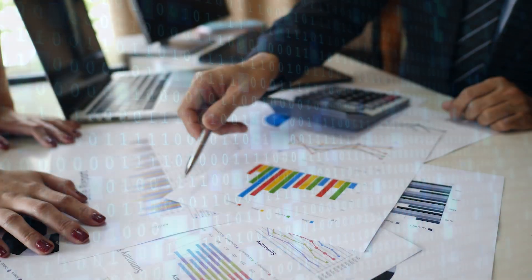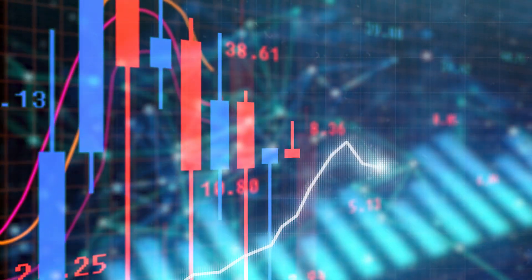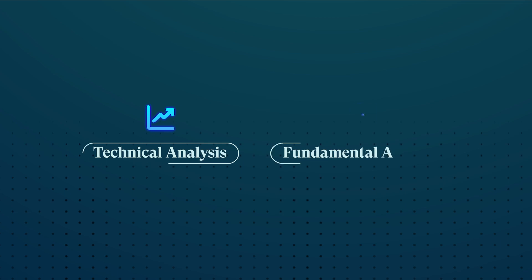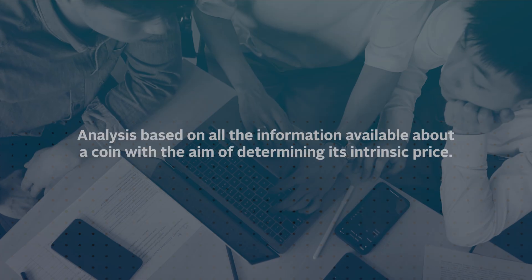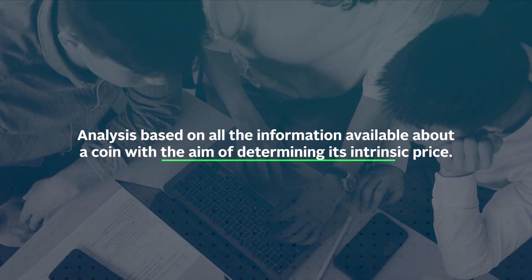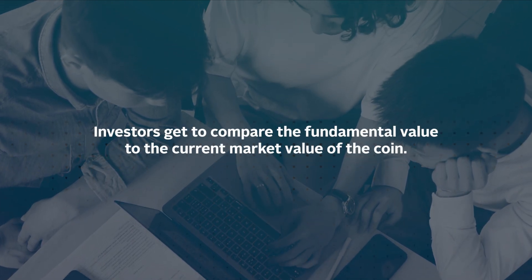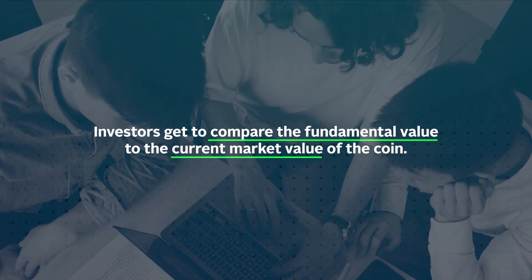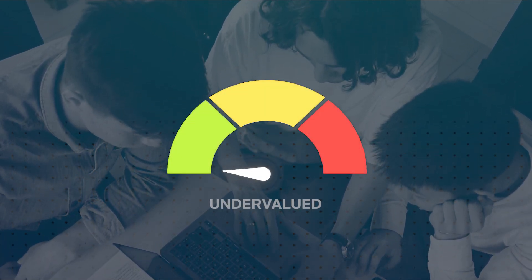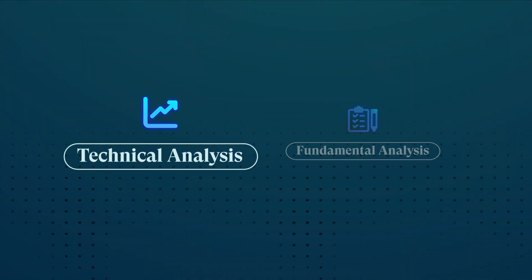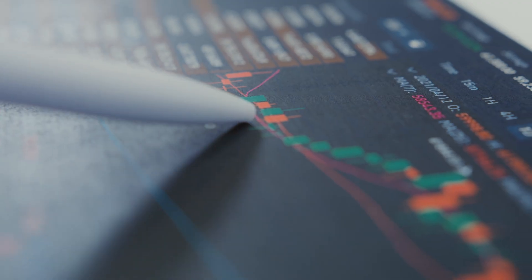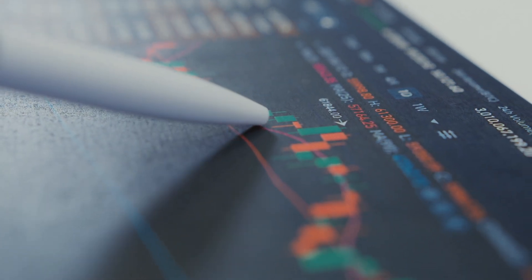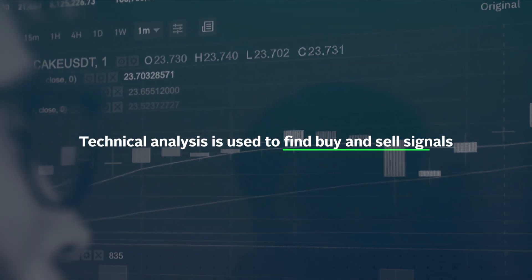Before we go any further, let's zoom out on the whole concept of crypto analysis. It's important to understand that on-chain analysis is just one of the ways in which cryptocurrencies are analyzed. The other two ways are technical and fundamental analysis. Fundamental analysis takes a deep dive into all the information available about a coin with the aim of determining its intrinsic price, allowing investors to compare the fundamental value to the current market value to see whether the coin is undervalued or overvalued. Technical analysis, on the other hand, is common among traders since it involves looking at past price movements to determine which way the market is likely to move next — at its core, it's used to find buy and sell signals.